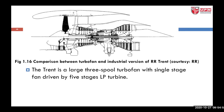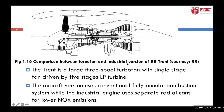This is a comparison between an aircraft turbofan and the industrial version of a Rolls-Royce Trent engine, since this type of engine is installed in both aircraft and land-based applications. This Rolls-Royce Trent engine is a large three-spool turbofan with a single-stage fan driven by five stages of low pressure turbine. The aircraft version uses a conventionally fully annular combustion system, while the industrial engine uses separate radial cans.